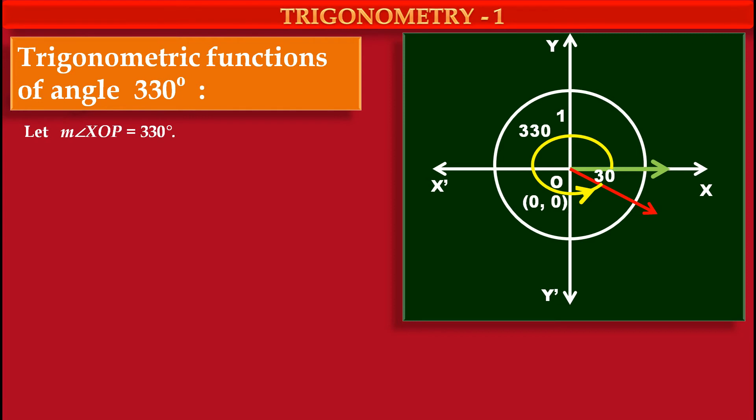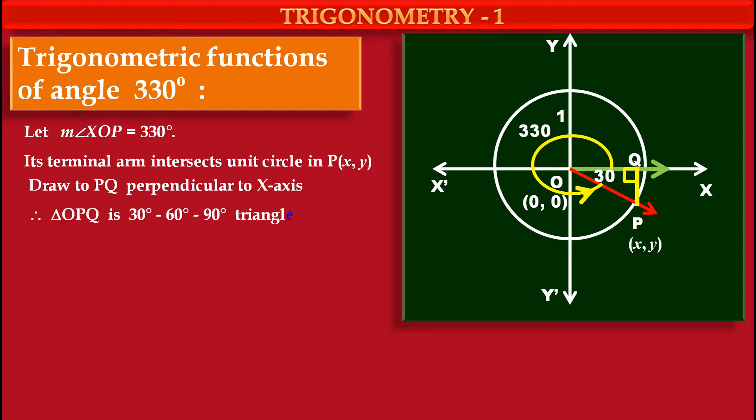we have to draw terminal arm OP which intersects our circle at point P having coordinates (x,y). Now we have to draw one perpendicular from point P to the x-axis at Q. Now because of this arrangement, we get one triangle OPQ.